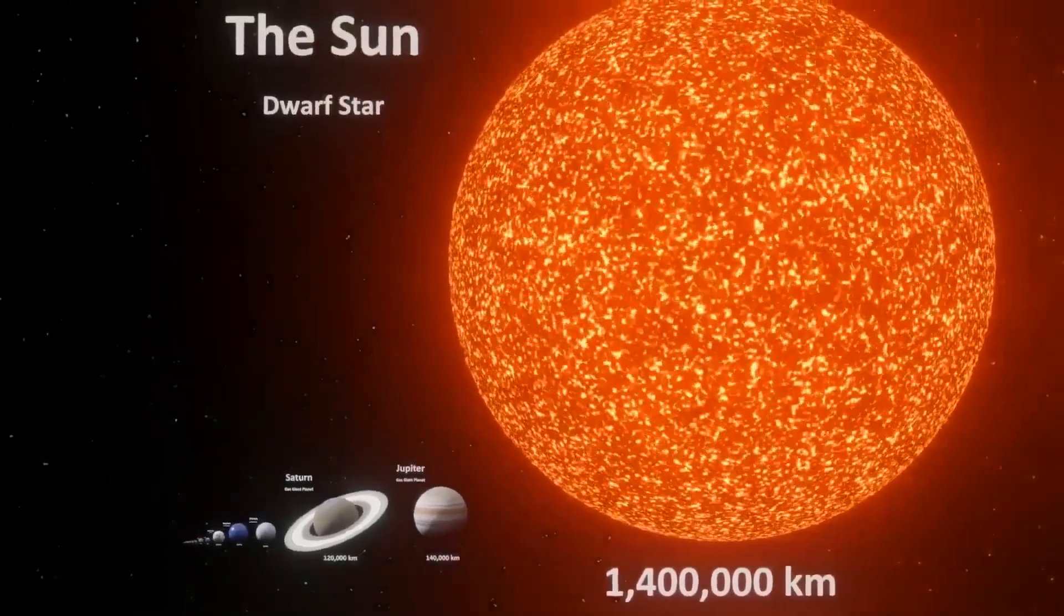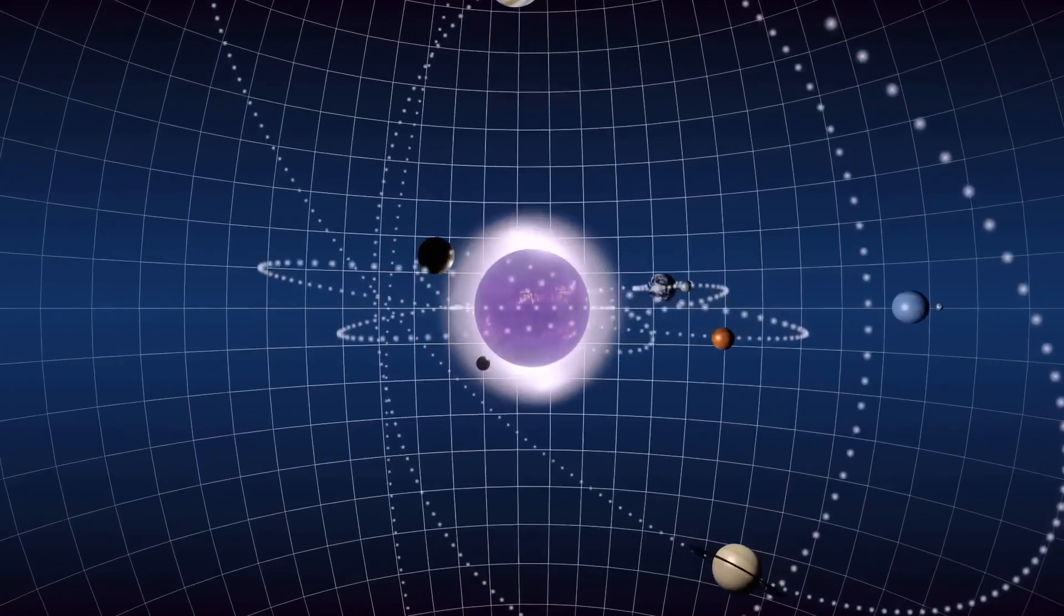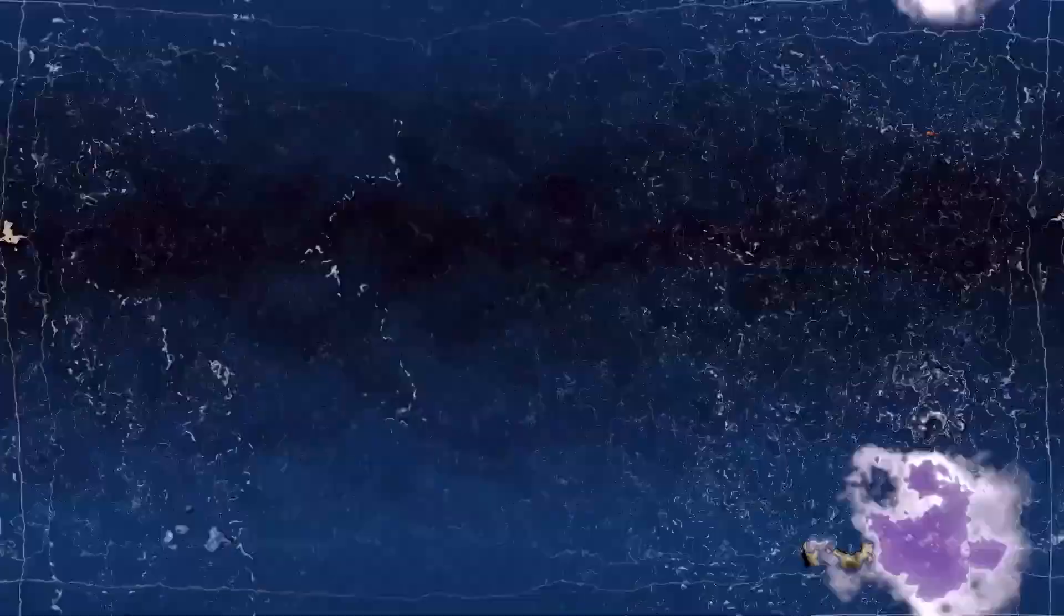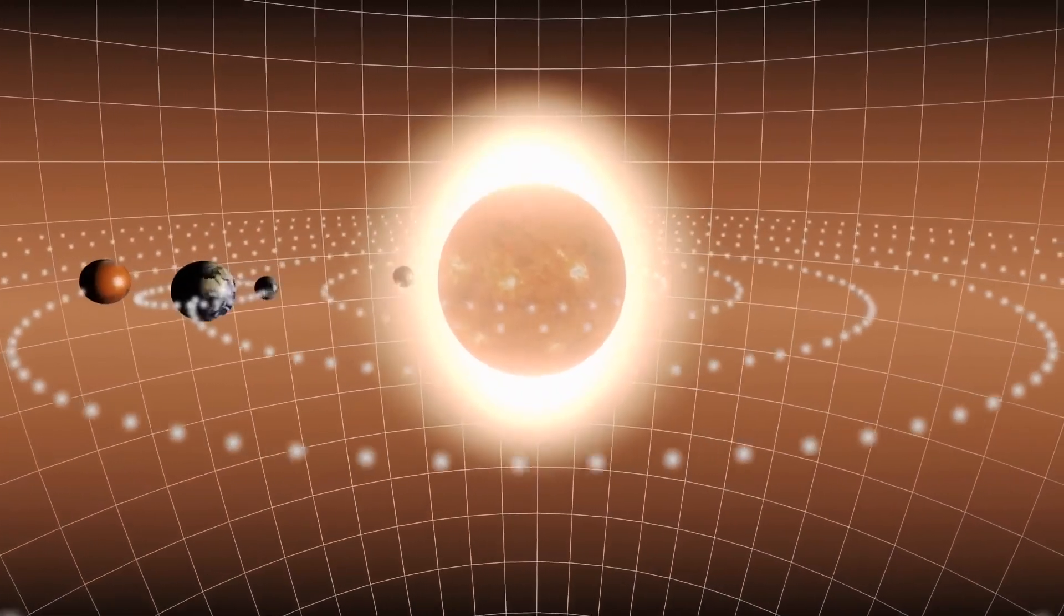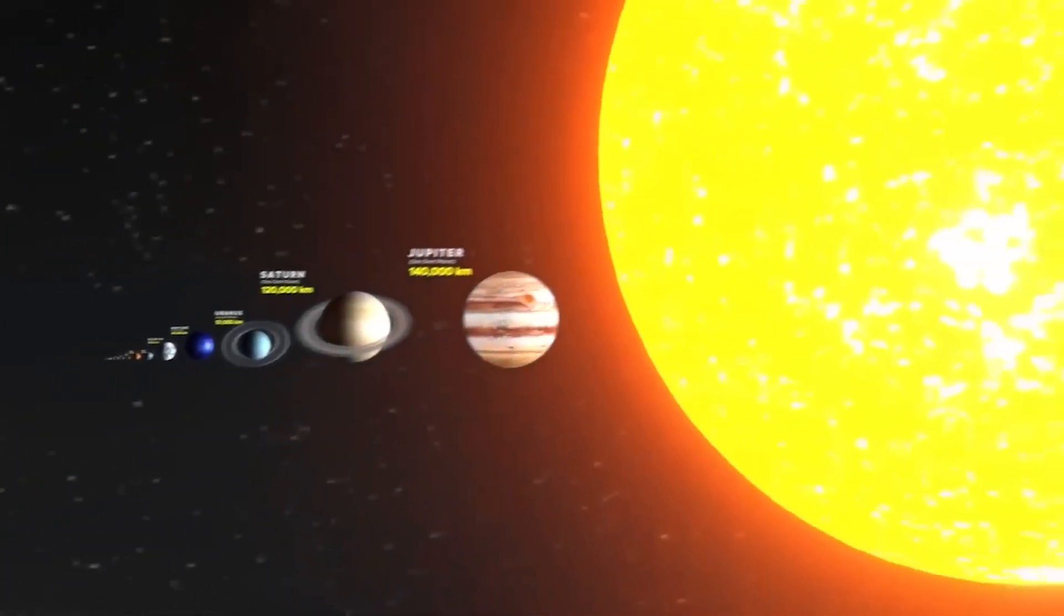Although they may appear close, their actual distances from us are immense. The sun, our radiant star, resides a whopping 150 million kilometers away from Earth on average. This distance is known as one astronomical unit, or AU.